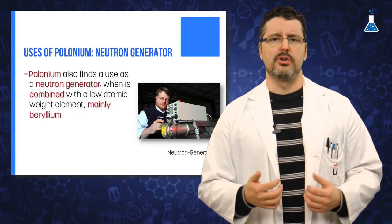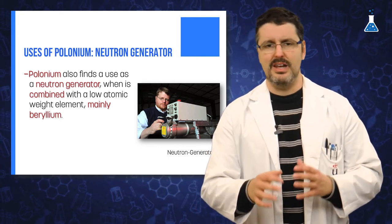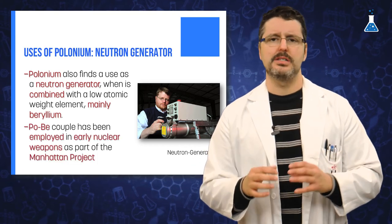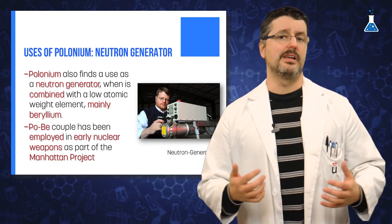Polonium also finds use as a neutron generator when it is combined with low atomic weight elements, mainly beryllium. This Polonium-Beryllium couple has been employed in early nuclear weapons as part of the Manhattan Project. This has been one of the undesirable uses of Polonium for human beings together with its use as a poison.